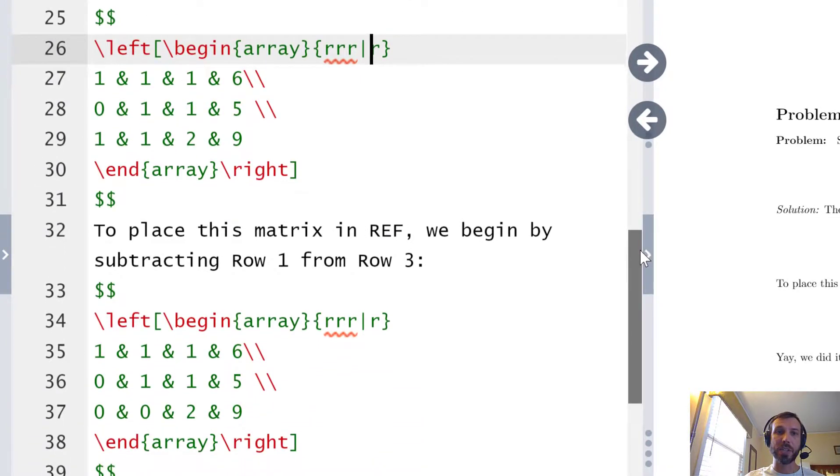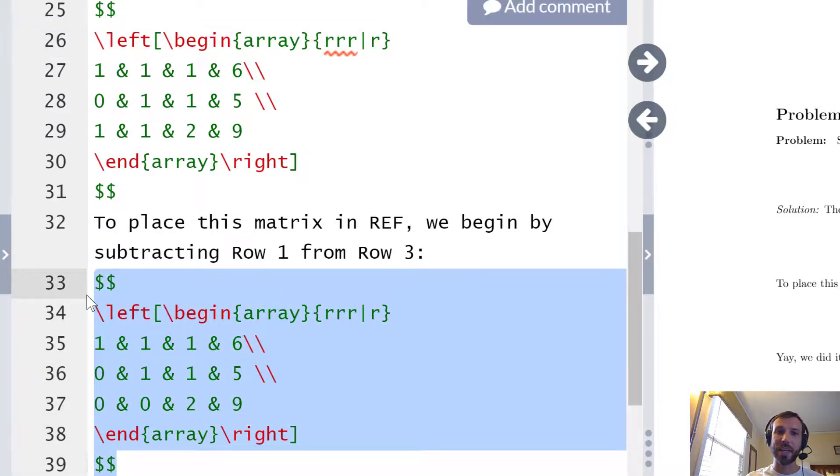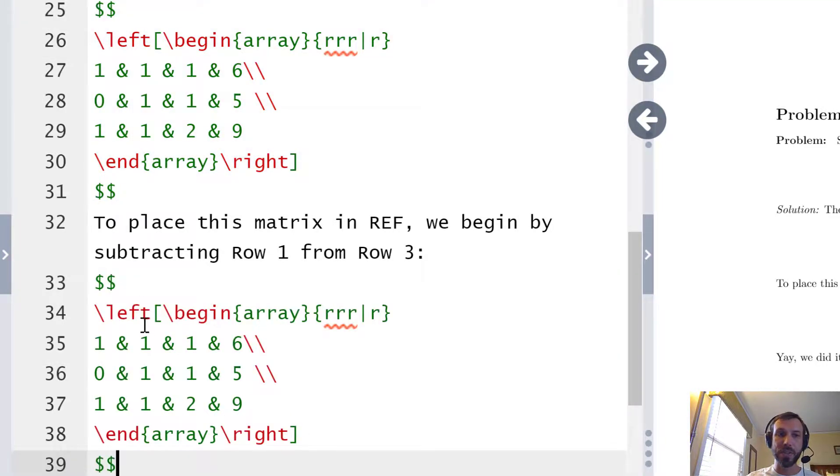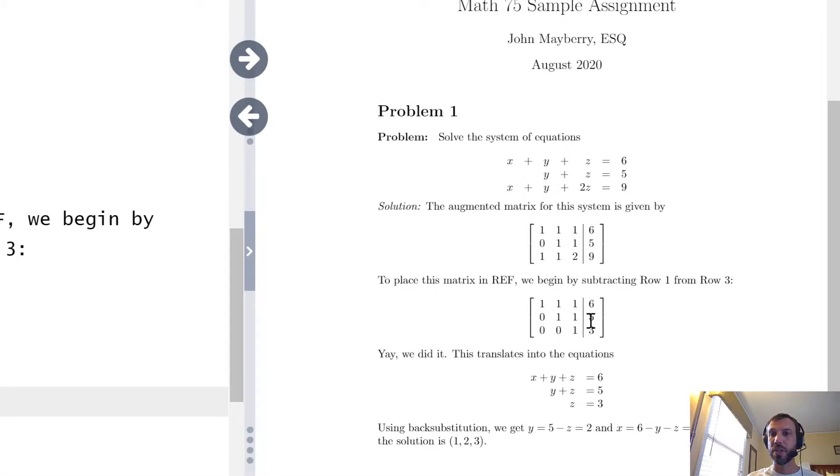As we move down the document we have some exposition explaining what we're going to do next and we're going to subtract row 1 from row 3. Now on paper you would have to rewrite the whole matrix and change something probably making an error, probably having to erase, probably having to deal with eraser shards and torn paper. What I like about writing this type of problem in LaTeX is that instead of rewriting everything we can simply copy and paste the previous matrix and then if I want to subtract row 1 from row 3 I can just go down here and perform that operation very quickly. Recompile my output and you'll see the new matrix appears below the old.